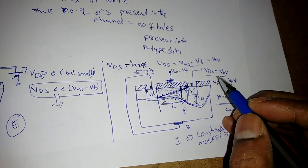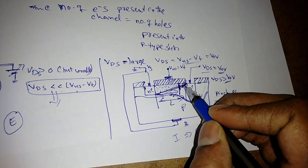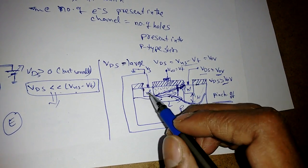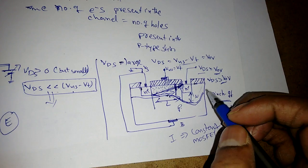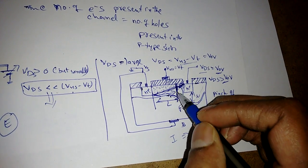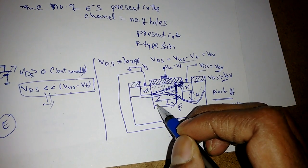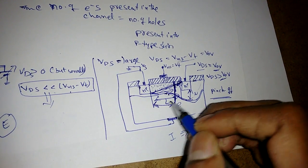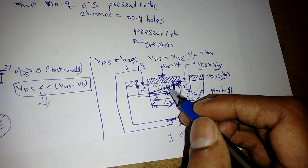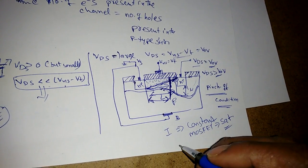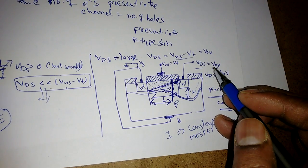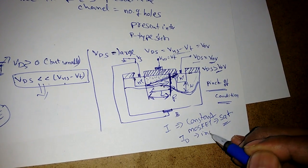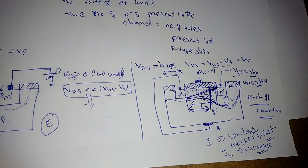To repeat: when VDS equals VOV, the channel is pinched off and the electrons reaching from source to drain are constant — they travel in a fixed time. When we apply more VDS beyond VOV, the channel length decreases. The electrons now have to travel a shorter distance, so they take less time and more current flows. This increase in current beyond the saturation point, depending on VOV, is the channel length modulation effect, causing ID to increase.